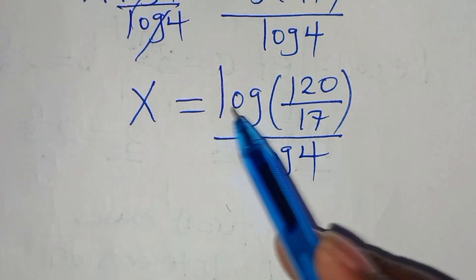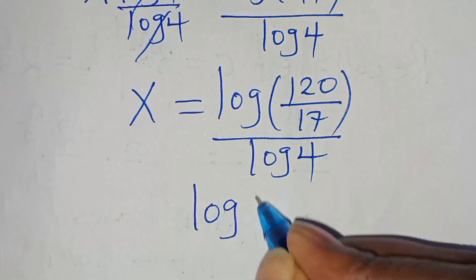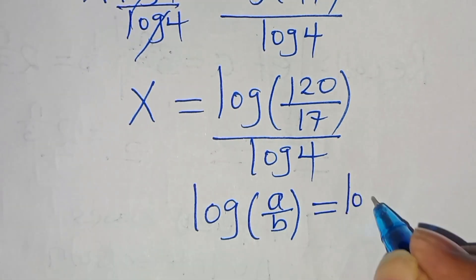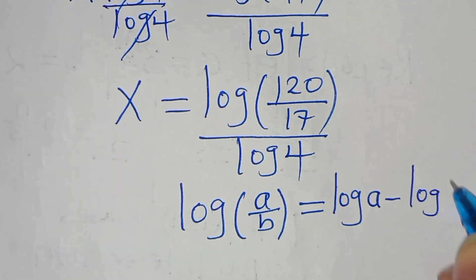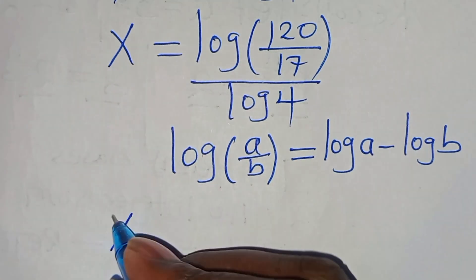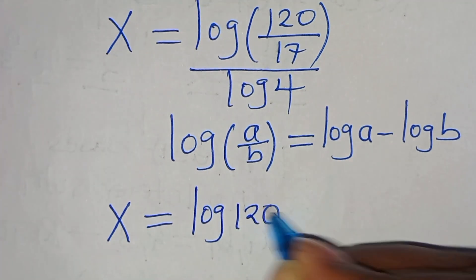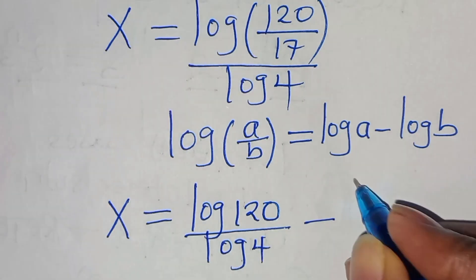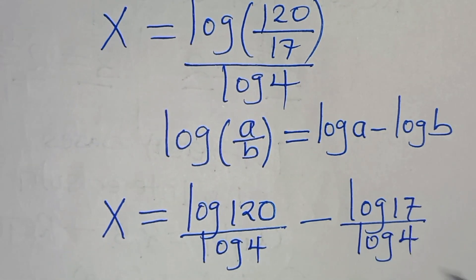The next step: log(120 over 17) is in the form log(a over b), which can be expressed as log a minus log b. Applying this logarithm property gives x equals log 120 divided by log 4, subtract log 17 divided by log 4.